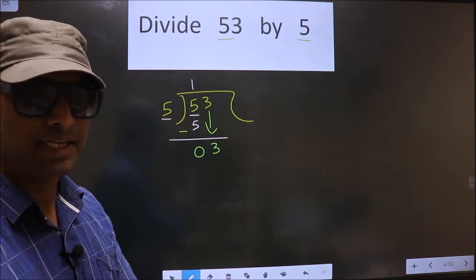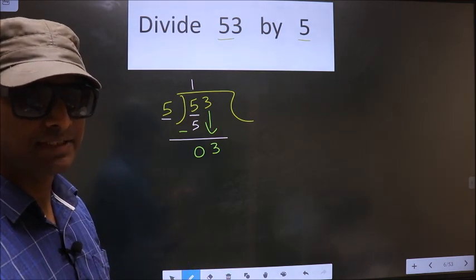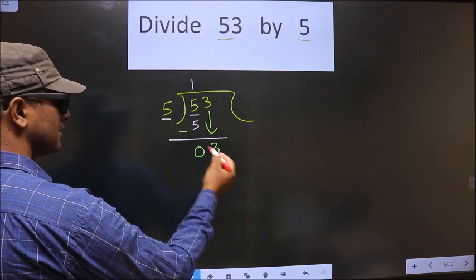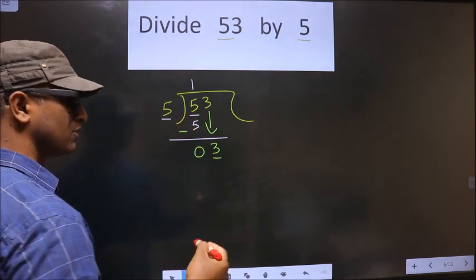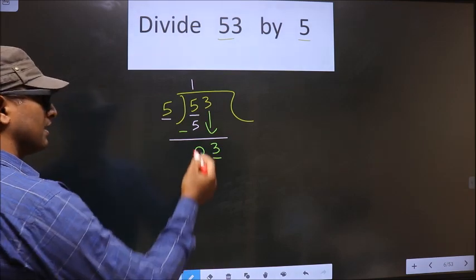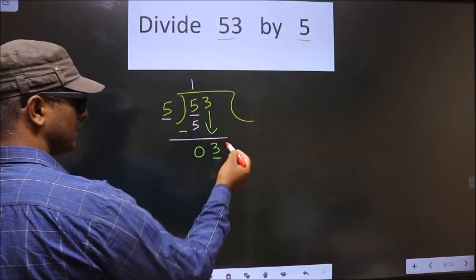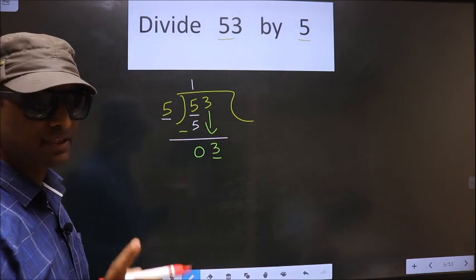This is where the mistake happens and the mistake is this way. Here the number 3 is smaller than 5. So what many do is they put the decimal here and take 0 here, which is wrong.